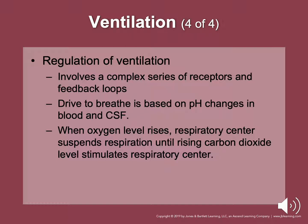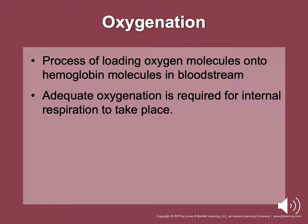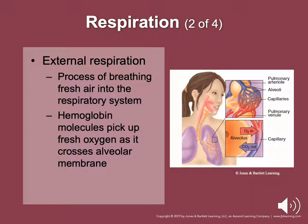Regulation of ventilation involves a complex series of receptors and feedback loops. The drive to breathe is based on pH changes in the blood and CSF. CO2 levels stimulate the respiratory centers. External respiration is the process of breathing fresh air into the respiratory system, exchanging CO2 and O2 between the alveoli and blood in pulmonary capillaries. Adequate ventilation does not guarantee external respiration. Hemoglobin molecules pick up fresh oxygen as it crosses the alveolar membrane.